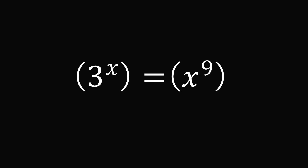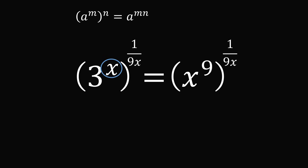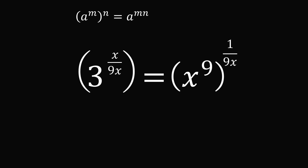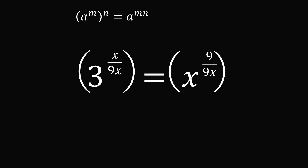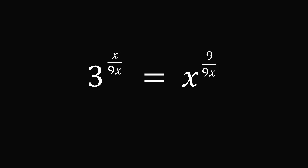Raise both sides of the equation to the power of 1 divided by the quantity 9x. We can now use exponent rules: a to the power of m raised to the power of n equals a to the power of m times n. On the left-hand side, we take m equal to x and n equal to 1 over 9x, so those x terms cancel, giving an exponent of 1 over 9. On the right-hand side, the 9 in the numerator cancels with the 9 in the denominator, giving an exponent of 1 over x. So we now have 3 to the power of 1 over 9 equals x to the power of 1 over x.